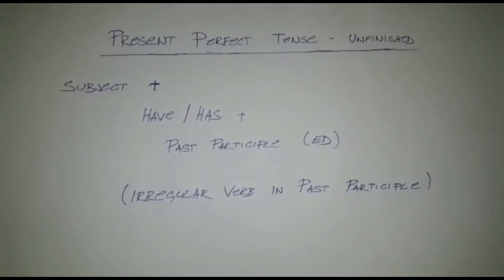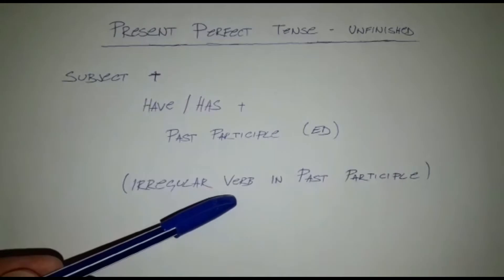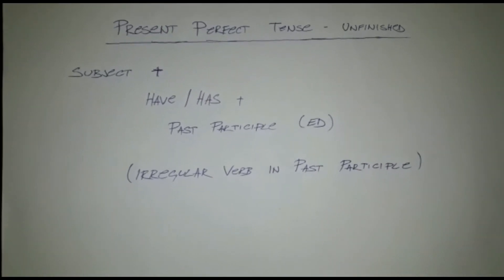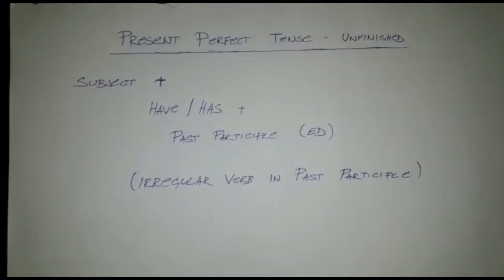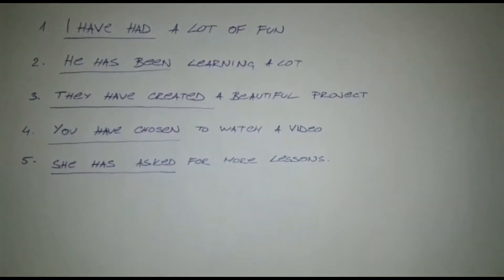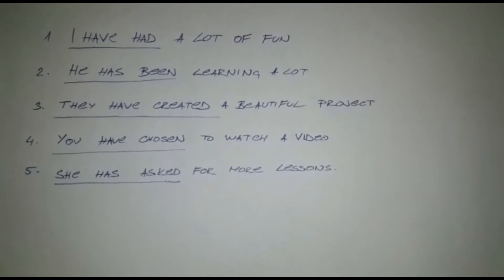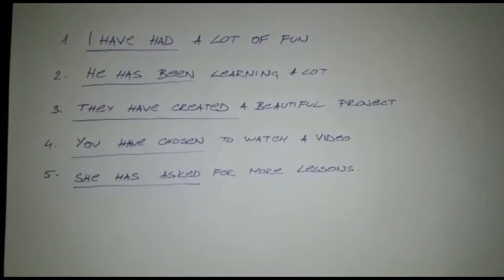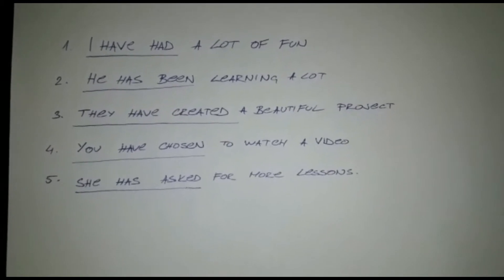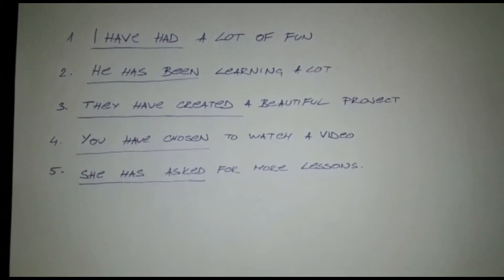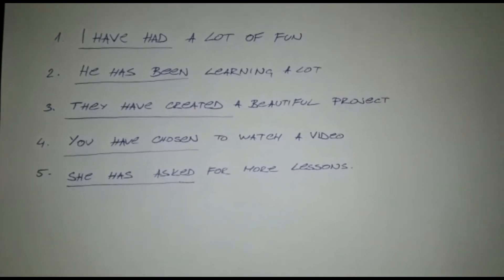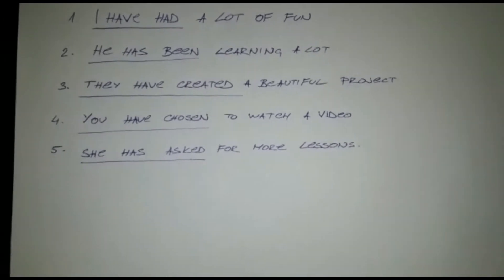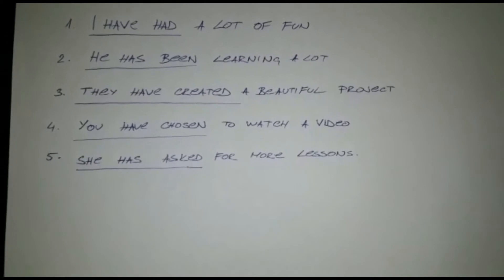Past participle is also known as irregular verb in past participle. An irregular verb is actually taking a normal verb and you add something to the end. Let's demonstrate the structure on a couple of examples: I have had a lot of fun. He has been learning a lot. They have created a beautiful project. You have chosen to watch a video. She has asked for more lessons.